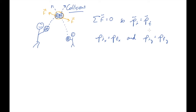In a physics problem, if you see the word collision, what you're meant to assume is that momentum is going to be conserved. Regardless of anything else, if somebody tells you there's a collision, what they mean is that the momentum of that system is going to be conserved. That's really what's meant by collision — conservation of momentum.